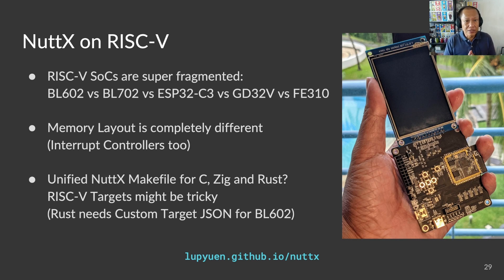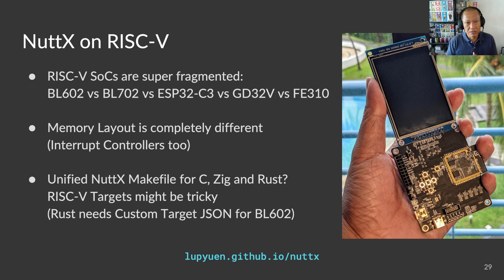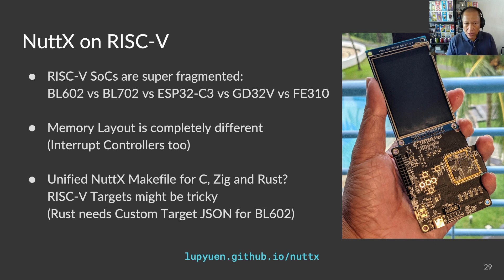Since we're running NuttX on RISC-V, let me share some thoughts on the RISC-V ecosystem and how it affects NuttX. Sadly, the RISC-V ecosystem today is severely fragmented. RISC-V microcontrollers like BL602, ESP32, GD32V, and FE310 all have vastly different internals. Memory layout is completely different. How we handle interrupts is also different. It's not easy to jump from one platform to another.